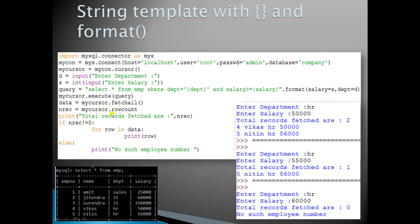Use mycursor.fetchall() to fetch all records, then mycursor.rowcount to count total rows. The rest of the program is the same as the previous one. Running it with department HR and salary 50,000 returns 2 records. Running again returns 1, and running once more returns 0 records.